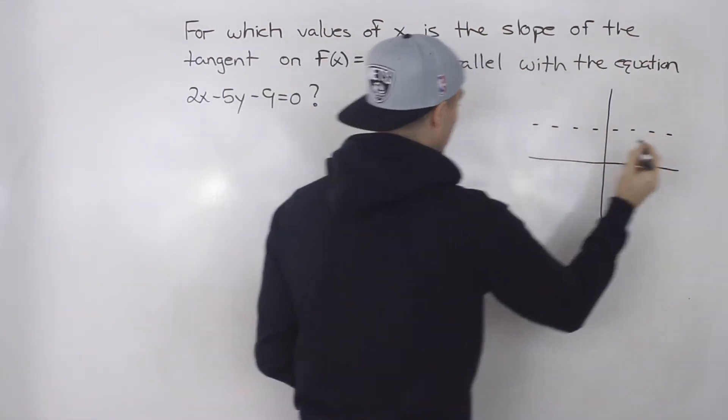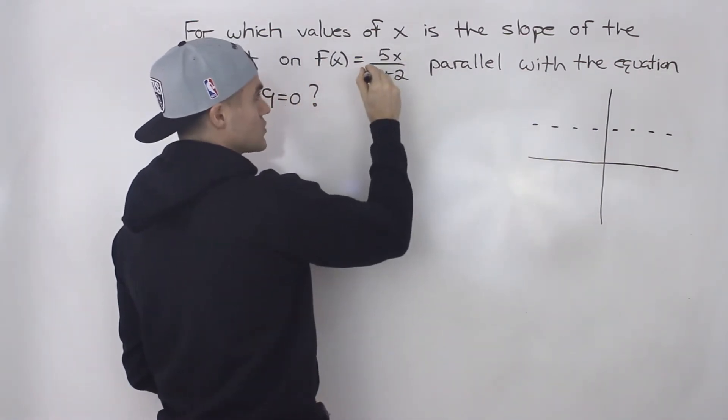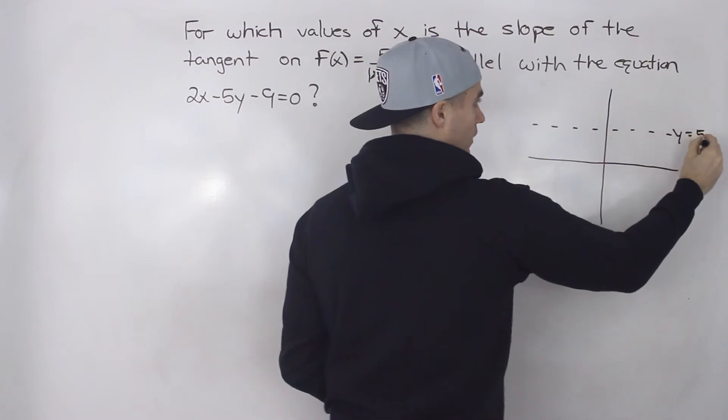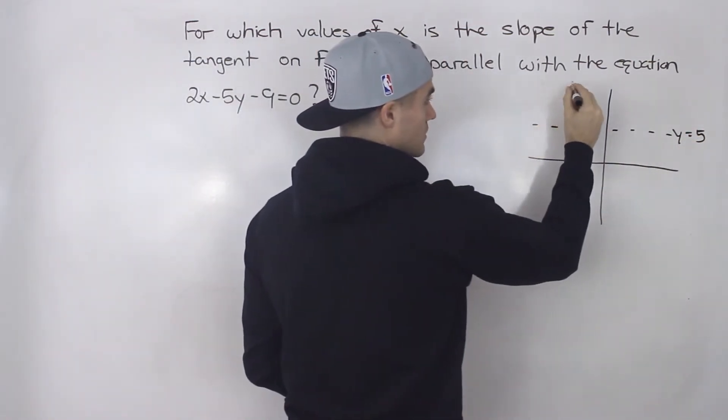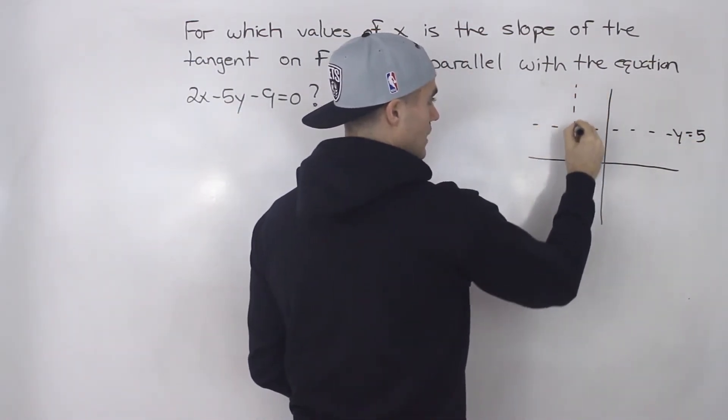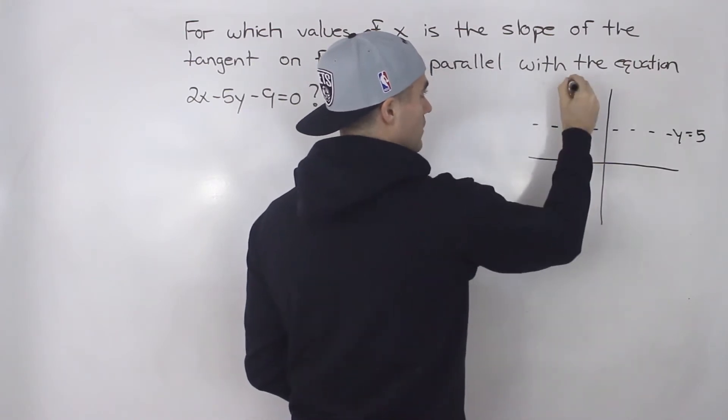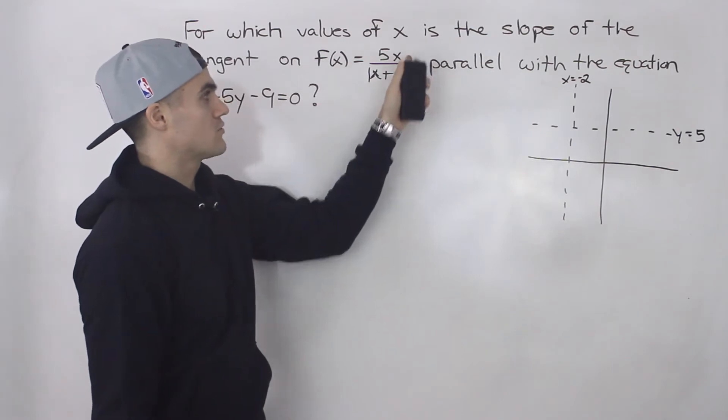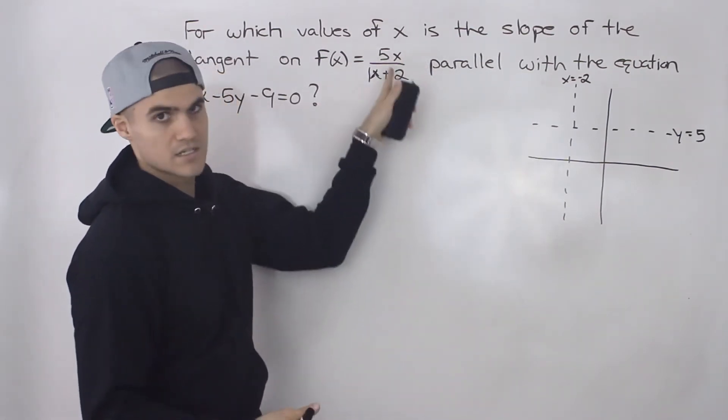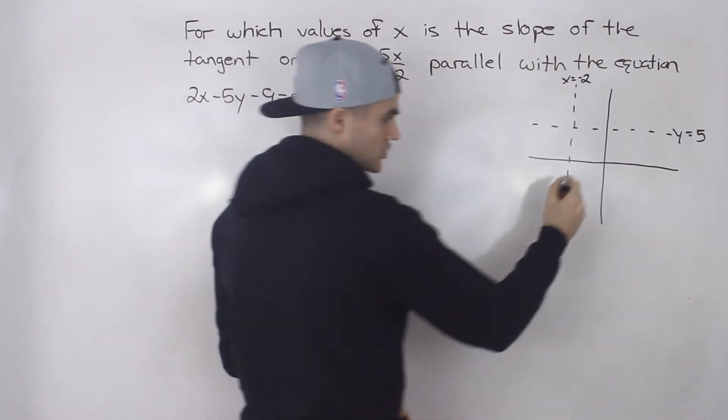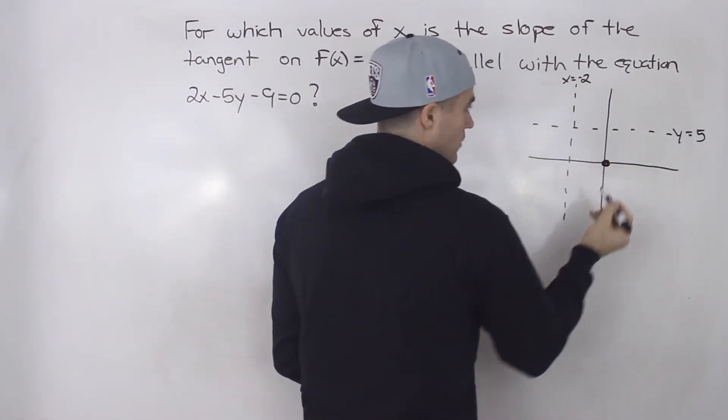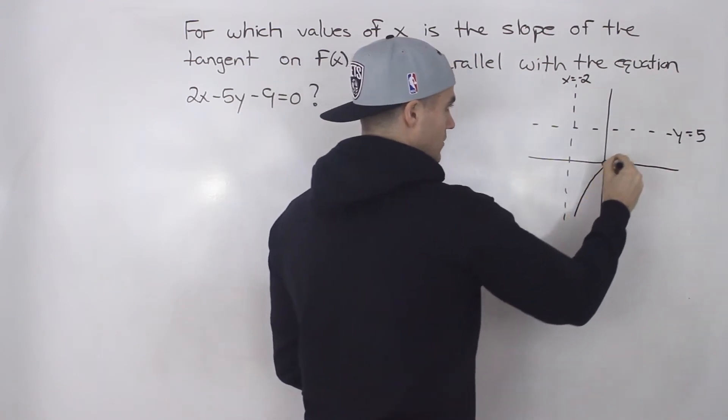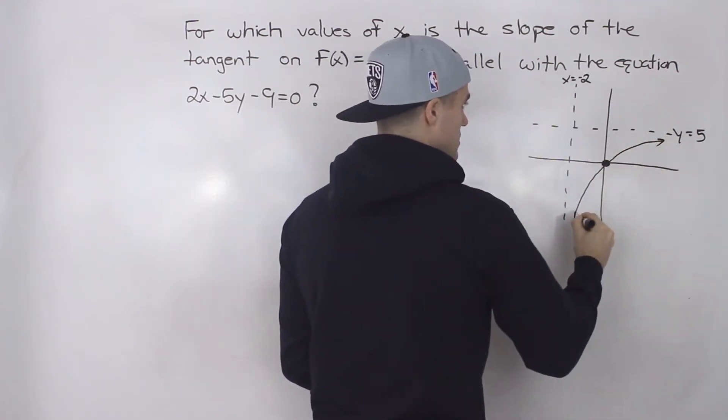So we got horizontal asymptote at 5, which is the ratio of the leading coefficients, and then we're going to have a vertical asymptote at x equals negative 2. And then if we plug in a value of 0 for x to get the y-intercept we would get 0. So we know that this function is going to go through the origin and that's the x-intercept as well. So the function is going to look something like this.